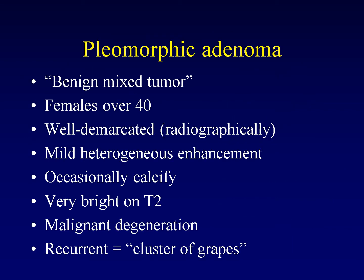Pleomorphic adenoma is the most common mass within the salivary glands overall, and within the parotid glands specifically. The term benign mixed tumor is a synonym for pleomorphic adenoma. This disease predominantly affects females over the age of 40, although there are plenty of male patients and younger patients into their teens and even first decade of life. Pleomorphic adenomas are generally well demarcated radiographically, though small tendrils of disease extend from the capsule into surrounding soft tissue, making them very difficult to resect and likely to recur without wide local excision. They tend to have mild heterogeneous enhancement, and occasionally will calcify, although that's not typical.